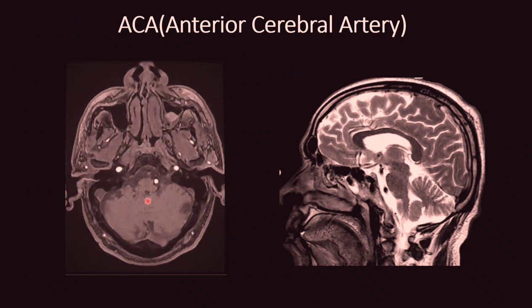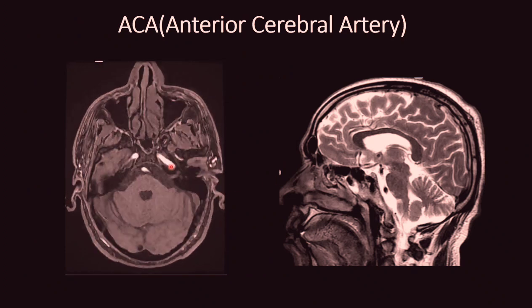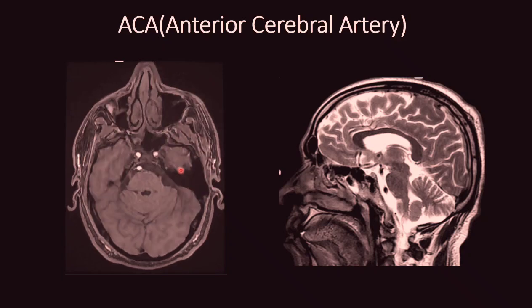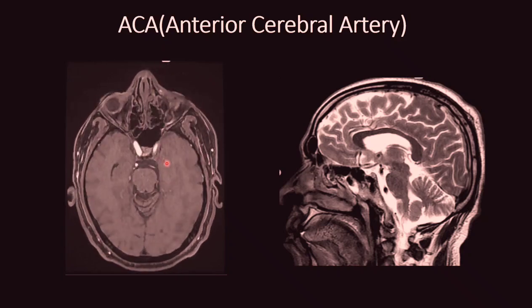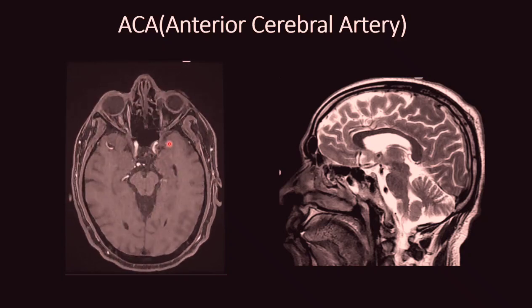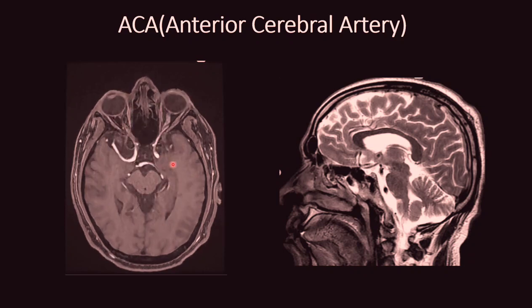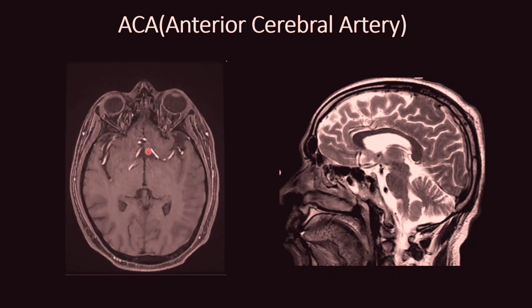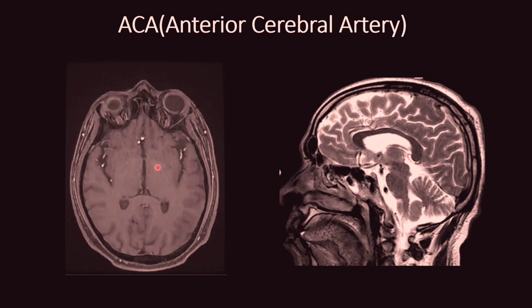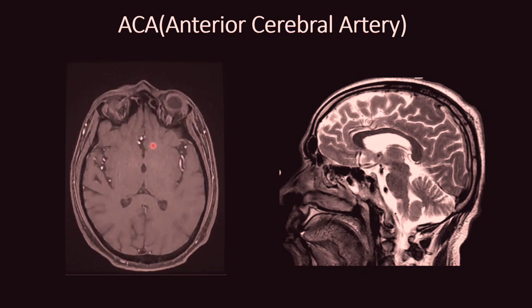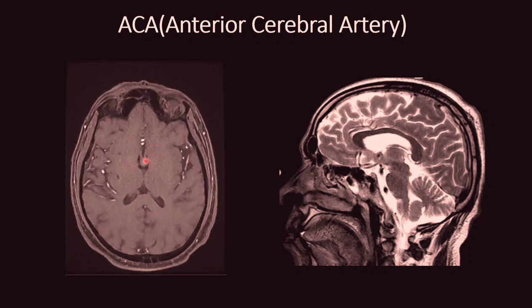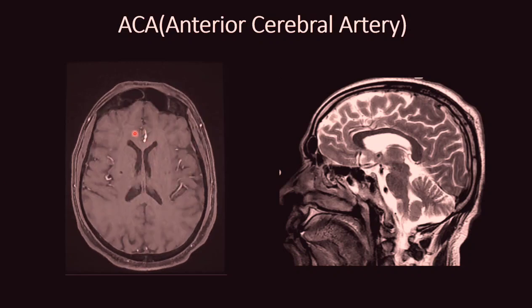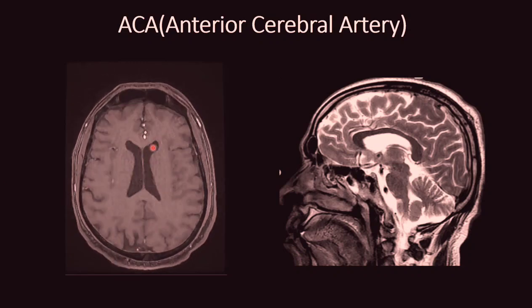Here is the MR TOF video showing both the internal carotid arteries ascending into their segments and finally terminating into the anterior cerebral artery and MCA. The ACOM communicates both the anterior cerebral arteries, followed by the A2 segment distal to the ACOM, and the A3 segment lying anterior to the genu of the corpus callosum.